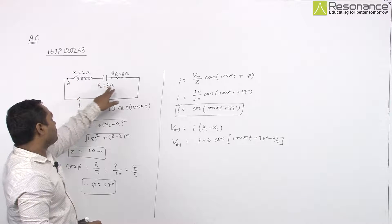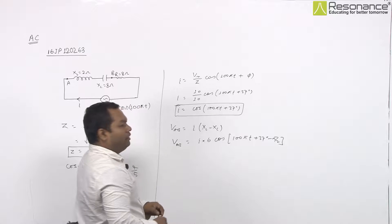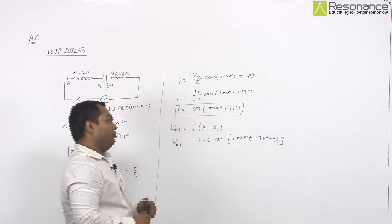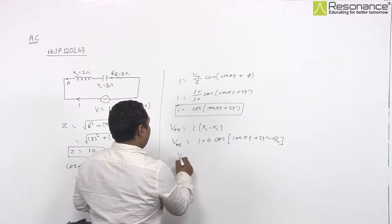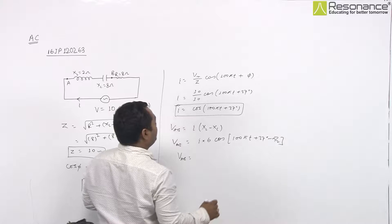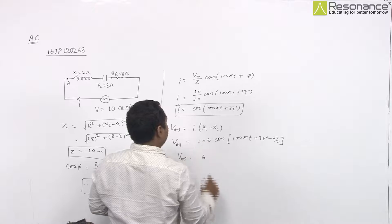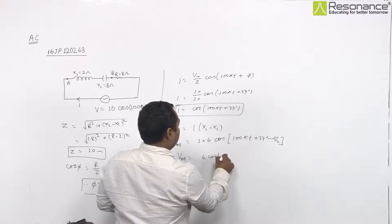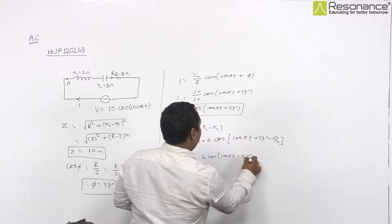So to find the potential difference across A and B, in this equation of I, we will have to add minus pi by 2 phase extra. So VAB will be equal to 6 cos of 100 pi T minus 53 degree.